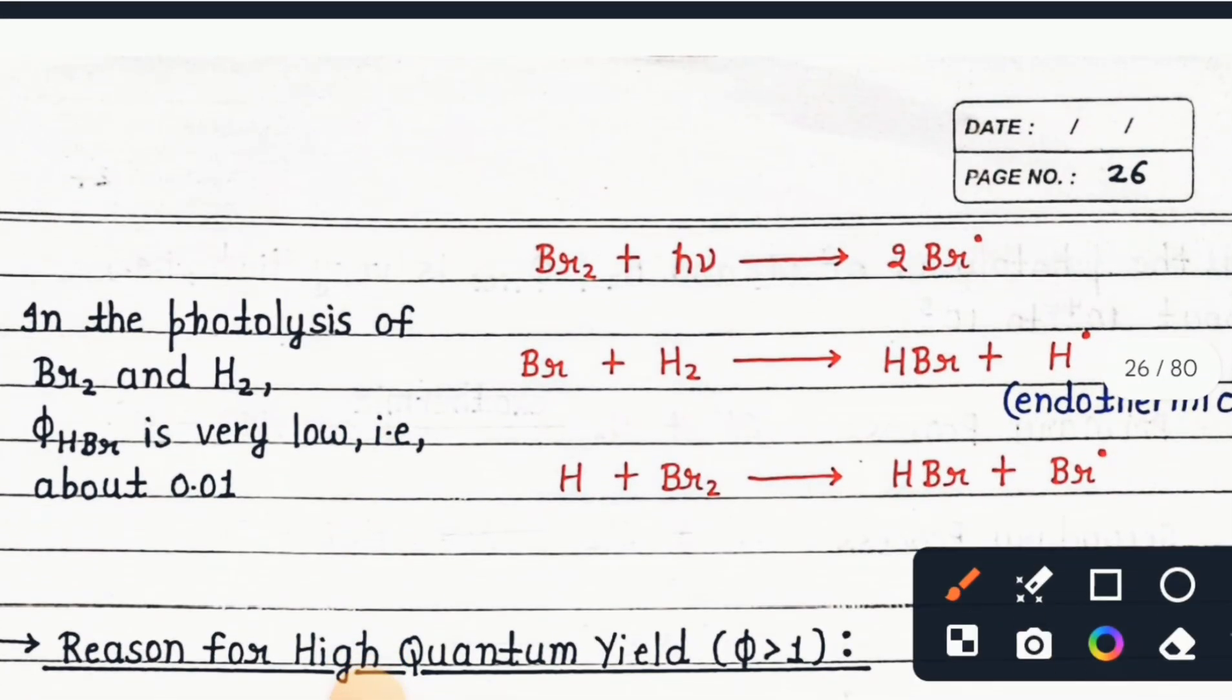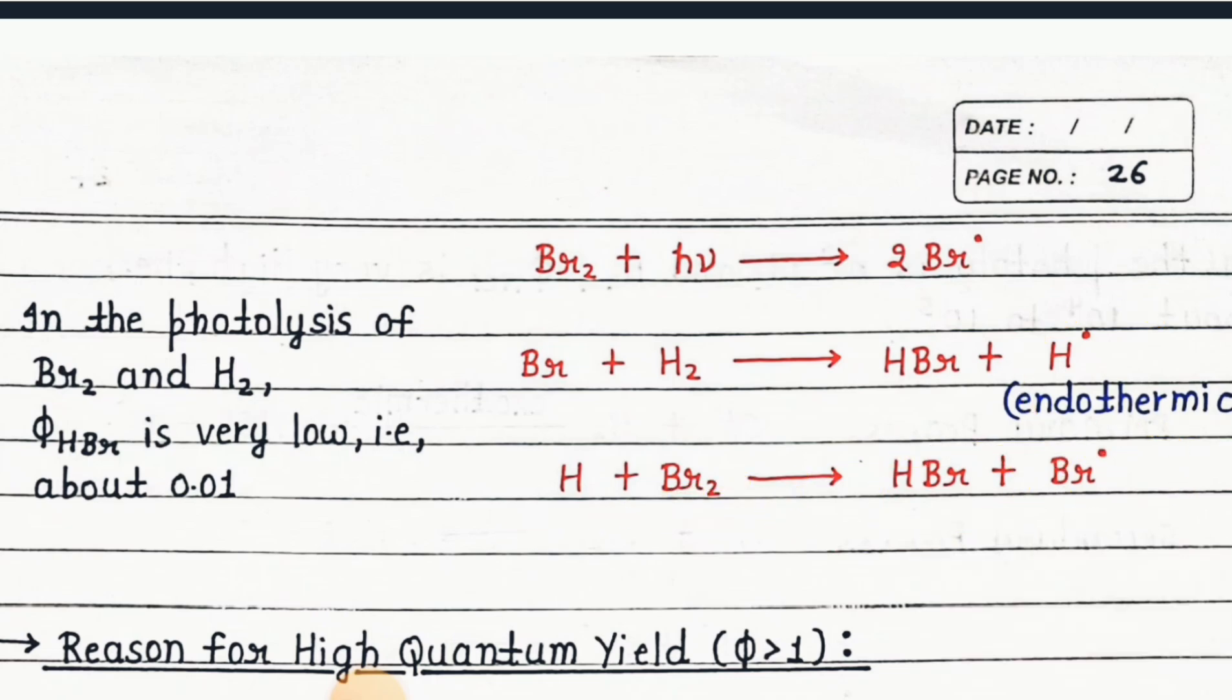In the photolysis of Br₂ and H₂, φ(HBr) is very low, about 0.01. Br₂ + hν → 2Br·. Br· + H₂ → HBr + H· (endothermic). H· + Br₂ → HBr + Br·.